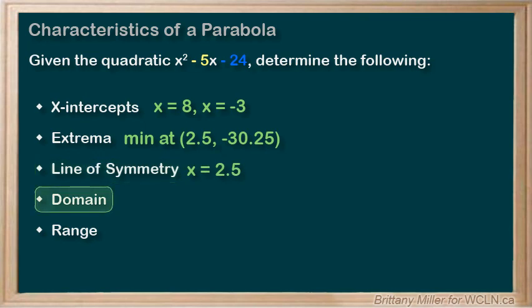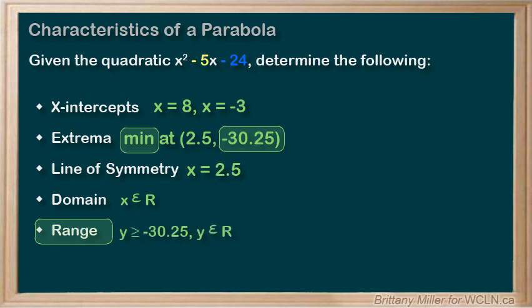The domain of a quadratic is always all real numbers, and we know that we have a minimum y value of negative 30.25.